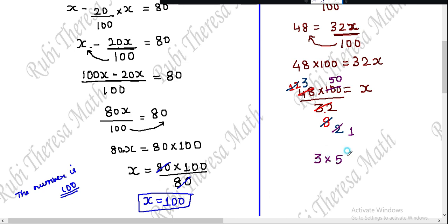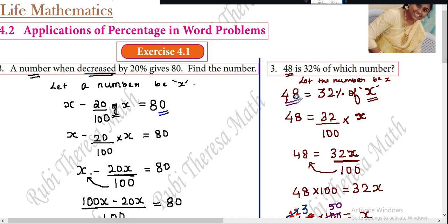So remaining 3 into 50 equals x. 3 into 50 equals x. x's value is 3 into 5, 15, then 0. So x's value is 150. The number is 150. 150's 32 percentage is 48, this number. If you check 150, you'll get correct 48. Correctly, 32 percentage of 150 is 48. If you look at the question, 48 is 32 percentage of which number. The answer is 150. That's the answer.